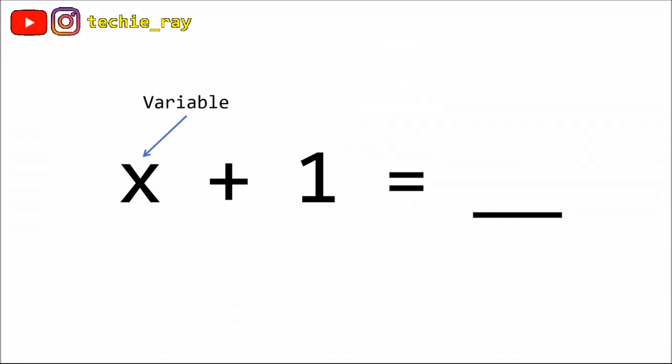Let's start with something simple, x plus 1. What's the answer? Exactly, we don't know. Why? Because the answer depends on x, which is a variable.